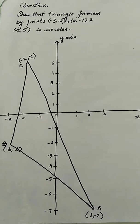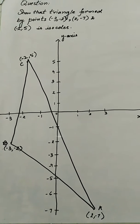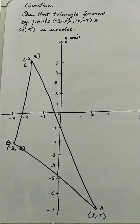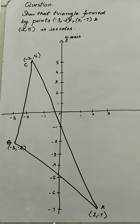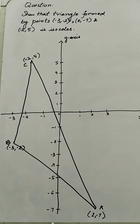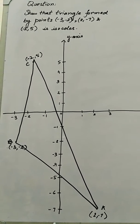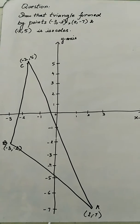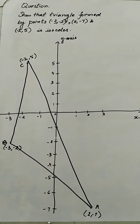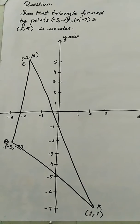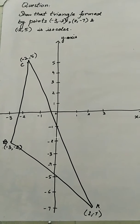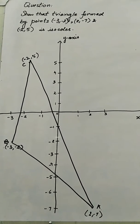Now look at another question in which 3 coordinates are given and we have to show that the triangle formed by these coordinates is isosceles. As we know, in an isosceles triangle two sides are equal. For our convenience we have drawn a diagram to get an idea of which two sides will be equal. We name the coordinates as A, B and C. We will calculate the length of AB and BC, and if they are equal it will prove that these are the coordinates of an isosceles triangle.